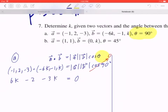So now you can collect like terms and solve for k. 6k minus 3k will give you 3k. Negative 2 brought to the right is going to be positive 2, which means k equals 2/3.